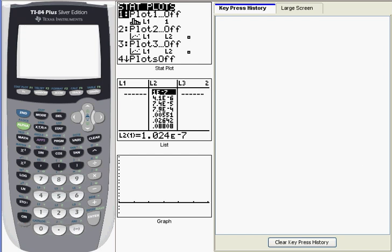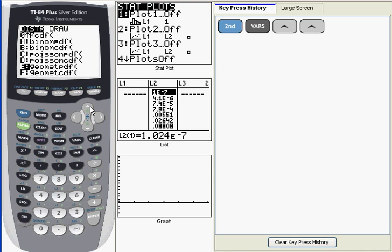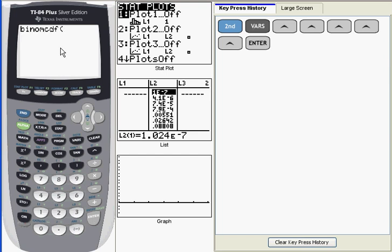Now, as you saw, binomial CDF is the function after binomial PDF in the distribution menu. Let's go take a look at that once more. The keystroke shortcut for binomial CDF is the alpha character B on the 84 models, and then on the 83 models, it's the alpha character A. But since I've got it highlighted right now, I'm going to go ahead and press enter to put it on the main window.